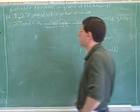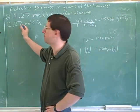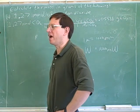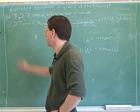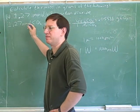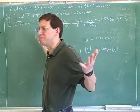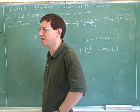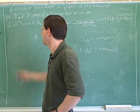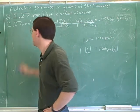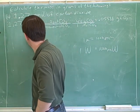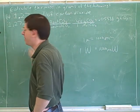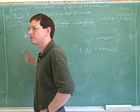Now, if you see a little 'm' in front of a unit, that means milli. If you see a little 'k', that would mean kilo — for example, kilomoles.